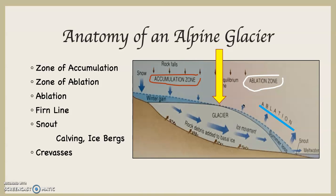So what is the yellow line? That yellow arrow is the firn line. The firn line divides the zone of accumulation from the zone of ablation. In other words, if you're at the tip of that yellow arrow and go to the left, the glacier is getting bigger; as you go to the right, the glacier is getting smaller.